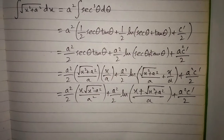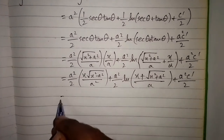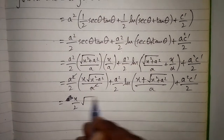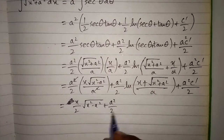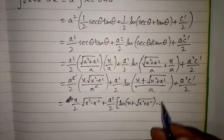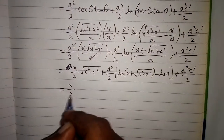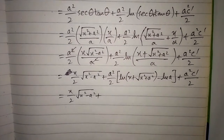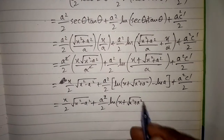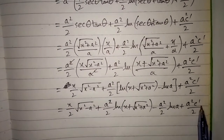We use the property of logarithms that ln of a fraction equals ln of the numerator minus ln of the denominator. The a squared terms cancel, giving us x over 2 times √(x²+a²), plus a squared over 2 times ln|x plus √(x²+a²)|, minus a squared over 2 times ln(a), plus a squared C′ over 2.